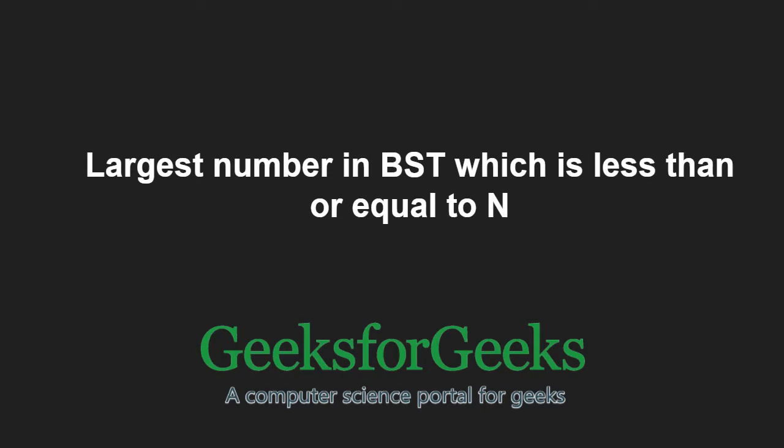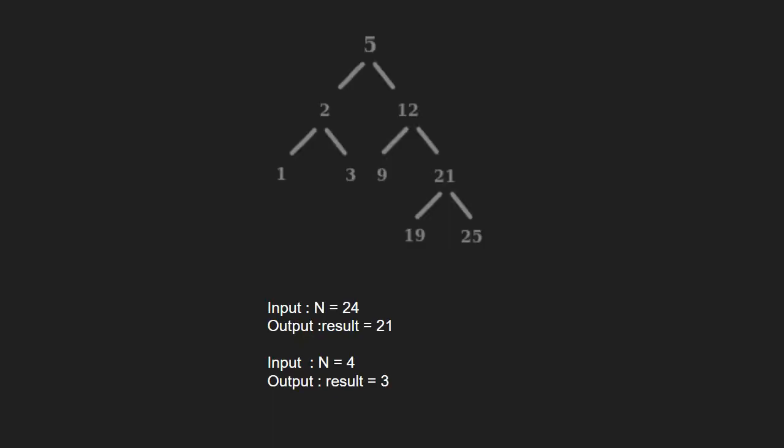First, let us take an example. We follow a recursive approach for solving this problem. We start searching for the element from the root node. If we reach a leaf and its value is greater than N, the element does not exist so we return -1. Else, if the node's value is less than or equal to N and the right value is null or greater than N, then return the node value as it will be the answer.